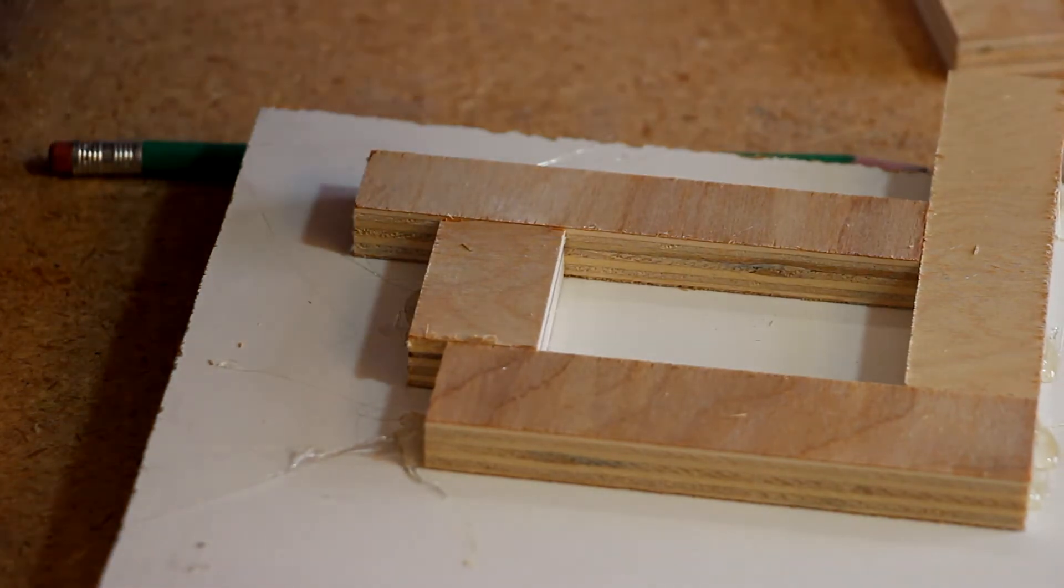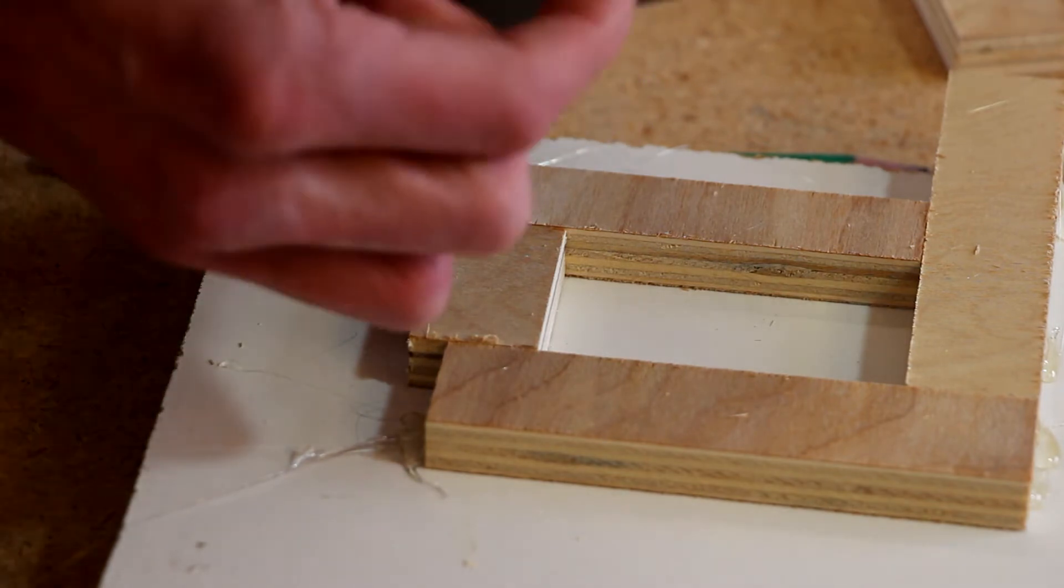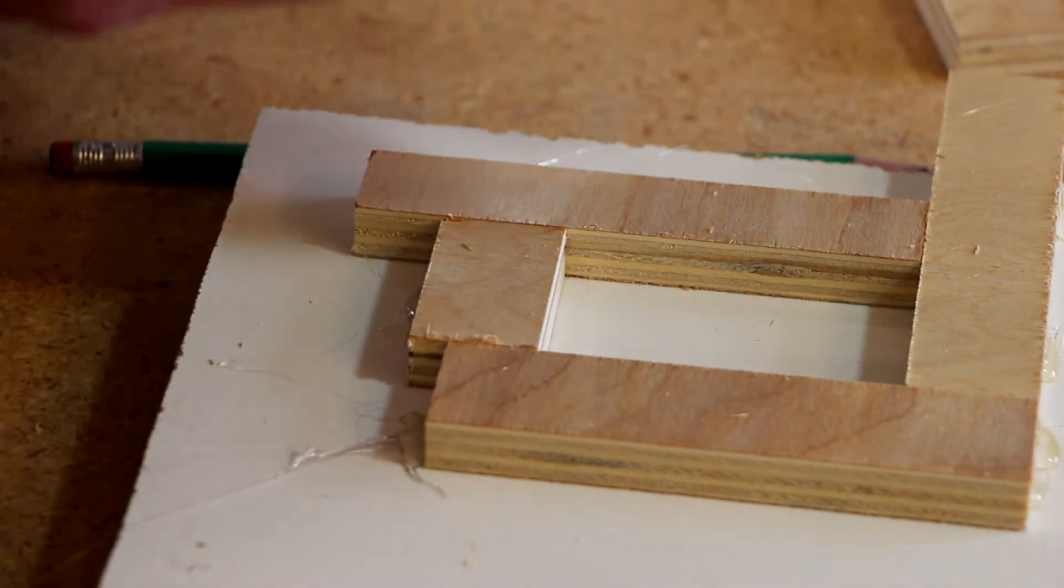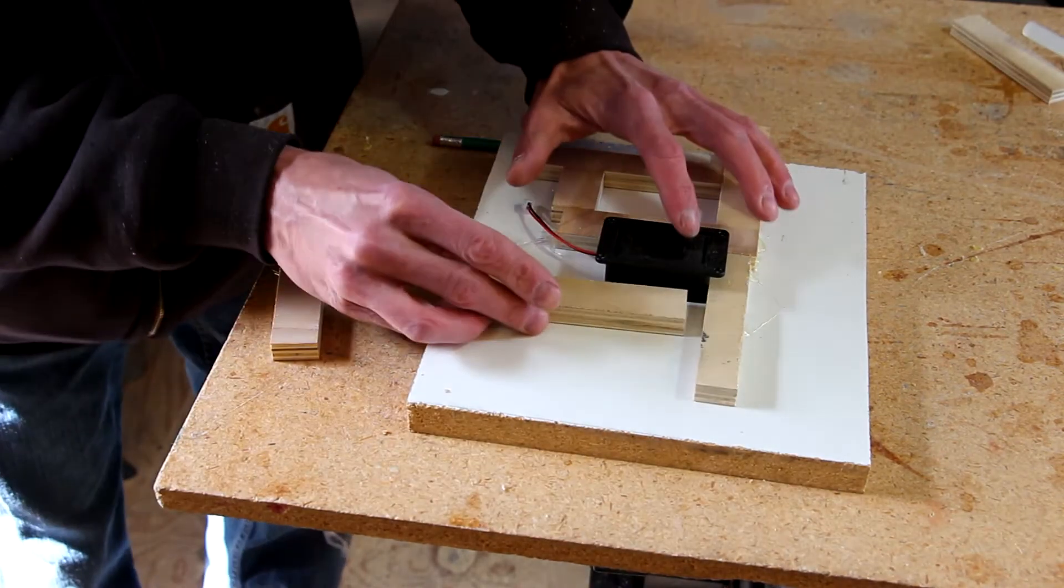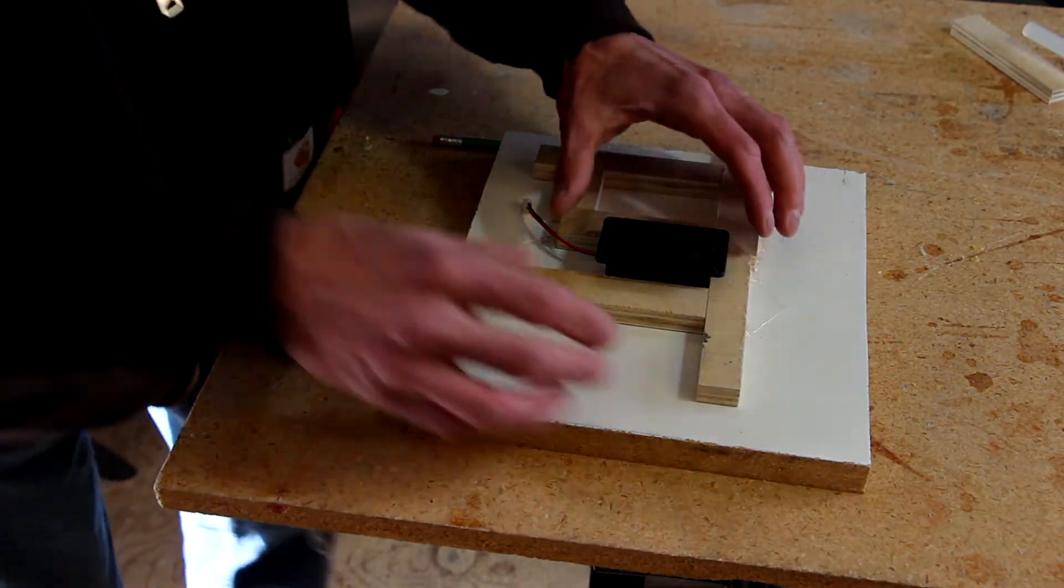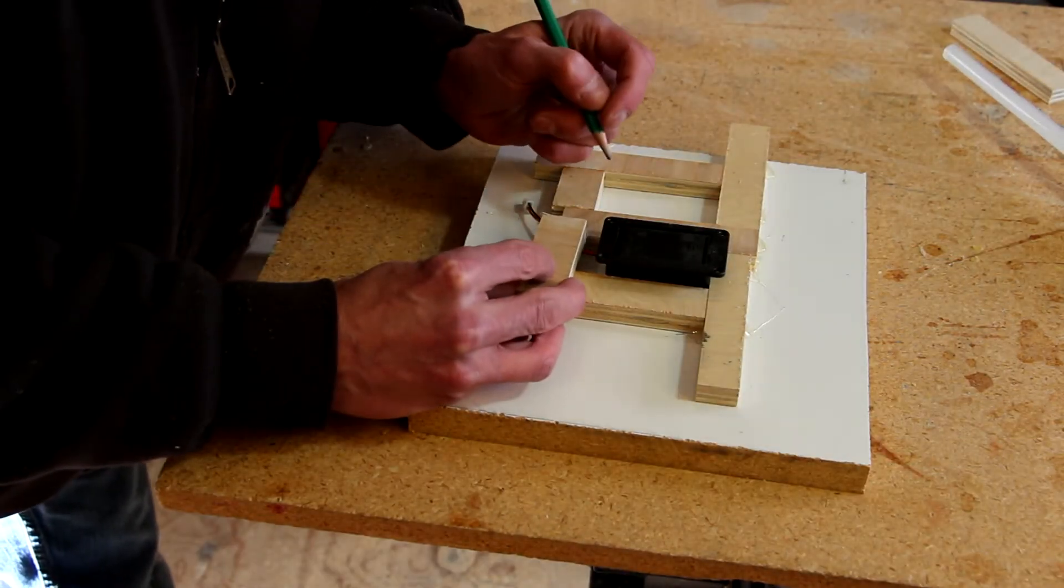Now I'm going to do one more outlining the inside of the battery box because I need to make this cavity deep enough that the box can fit in. I'm trying not to use a ton of hot glue because once I have the template made I want to be able to pull these pieces off. And I'll mark for this little short end piece.